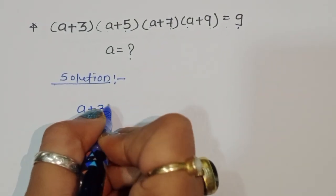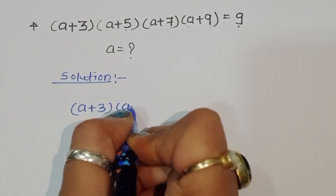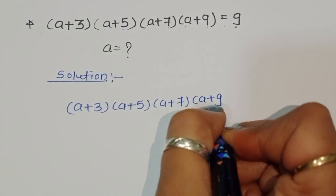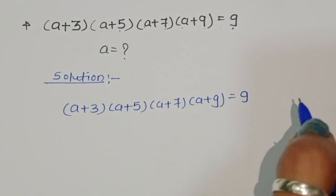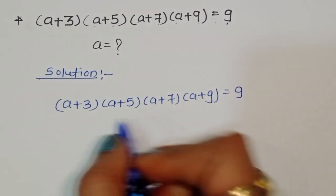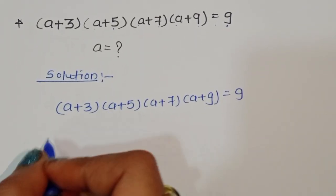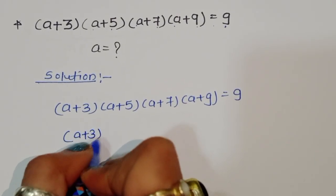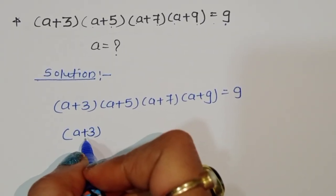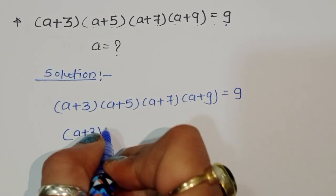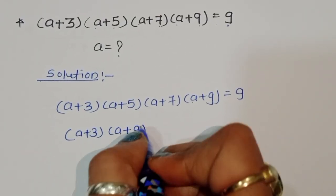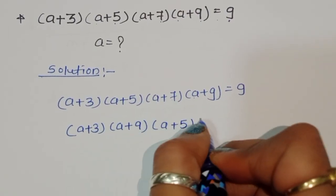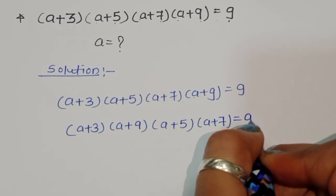We have (A+3)(A+5)(A+7)(A+9) = 9. We can change the place of these numbers, so we rewrite it as (A+3)(A+9) times (A+5)(A+7) = 9.